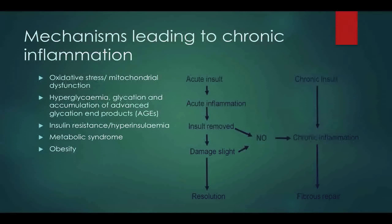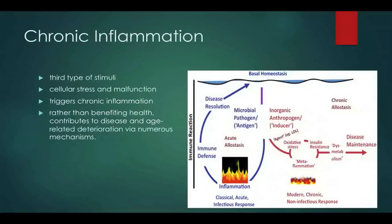Chronic inflammation doesn't benefit health like acute inflammation can — it actually contributes to disease and age-related deterioration. The diagram shows that an acute insult leads to acute inflammation, you remove the cause, and get resolution. But a chronic insult with significant damage leads to chronic inflammation and fibrous repair. That's where nutrition comes in. We've seen it with cigarette smoking — chronic inflammation leads to disease. In medicine, we don't often think about nutrition in this same sense.